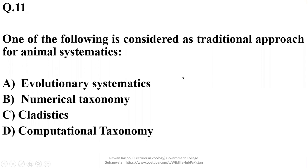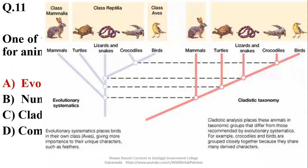One of the following is considered as traditional approach for animal systematics. Evolutionary systematics is the oldest of all approaches and it is said to be traditional approach in case of animal systematics. And evolutionary systematics it classified birds as separate groups because they are given more importance to their unique characters such as presence of feathers or flight. While Cladistic taxonomy is somehow different, it classified birds as a group of reptiles. And birds are grouped together because they share many derived characters with the reptiles.